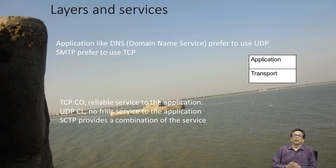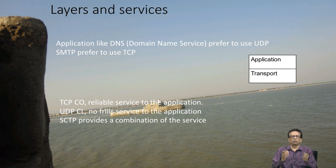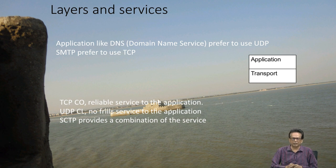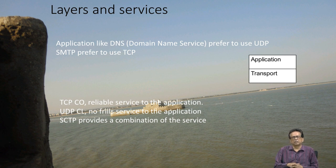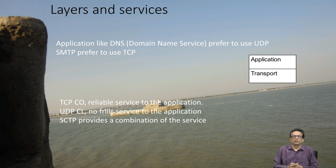The application layer — one example is DNS, the Domain Name System, which converts the URL that we type, or the email address that we type, into something called an IP address. DNS prefers using UDP for typical reasons, and SMTP, the mailing protocol used on the internet, uses TCP.